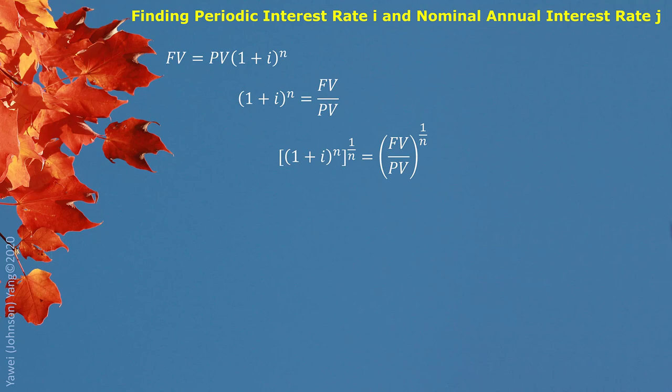So we do nth root on both sides, we can have 1 plus i isolated out. In that case, we can solve periodic interest rate i equals to the ratio between future value and present value to nth root minus 1.